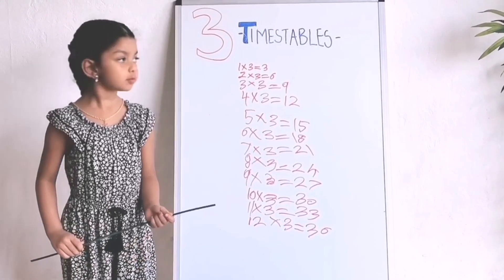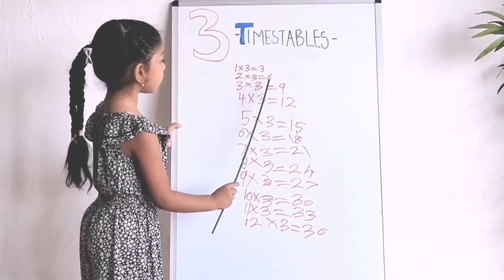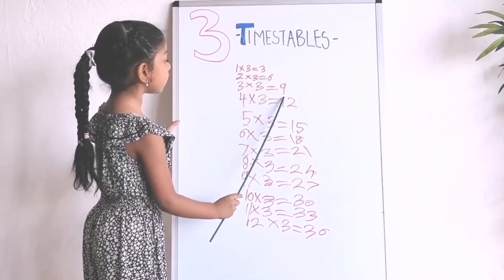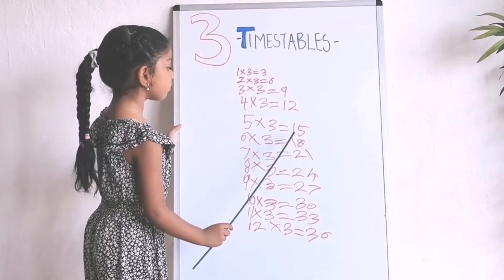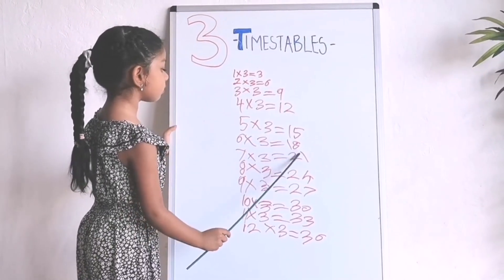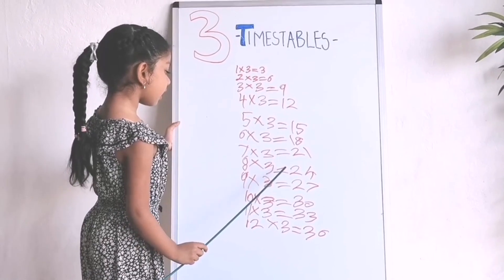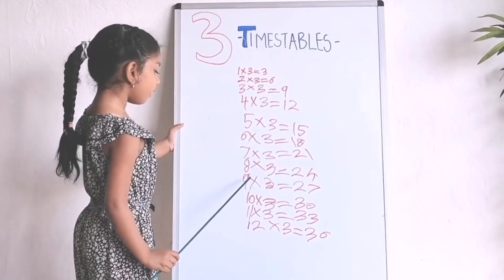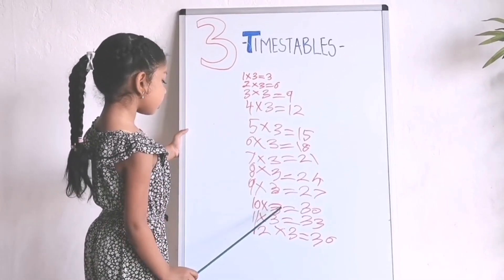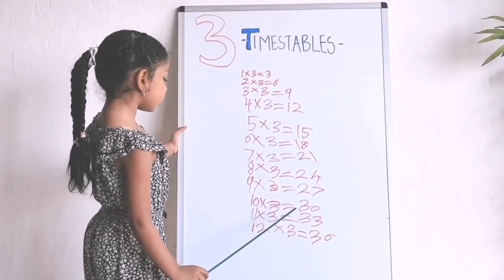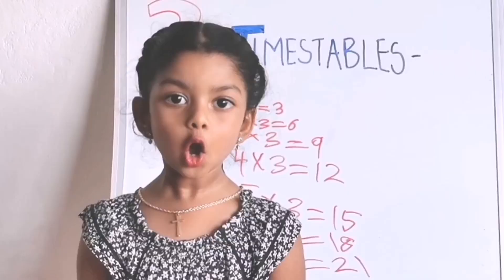I will teach you one more time. One times three is three. Two times three is six. Three times three is nine. Four times three is twelve. Five times three is fifteen. Six times three is eighteen. Seven times three is twenty-one. Eight times three is twenty-four. Nine times three is twenty-seven. Ten times three is thirty. Eleven times three is thirty-three.